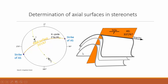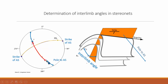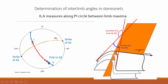What is missing now is the interlimb angle. When we know how our fold looks and how it is oriented, it is clear the interlimb angle goes from one limb to the other with a certain magnitude. In the stereo net, constructing this is a little more complicated. The first thing we do is plot the pole to the axial surface. We have the axial surface in orange, and its pole is this blue dot down here, fairly close to one of the clusters.